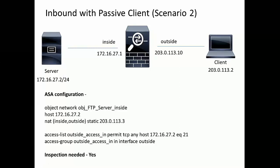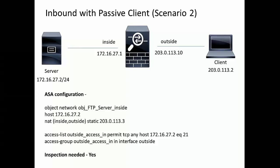Let's look at the second scenario: inbound FTP with a passive client. A client on the internet is connecting to the FTP server behind the firewall. The NAT and ACL configuration on the ASA is exactly the same as the previous scenario. The key difference is the need for inspection on the ASA, because the data channel is going to be opened by the client. Once the client sends the PASV command, the port information is sent by the server. The ASA's inspection engine needs to look into the packet and change the embedded IP address to the NATed IP of the server. Once this is done, the client will initiate the data channel, and inspection on the ASA needs to open a dynamic pinhole for this secondary data channel.